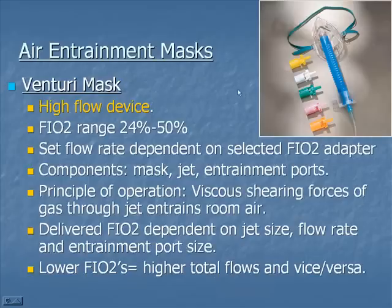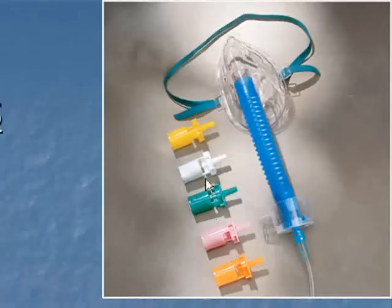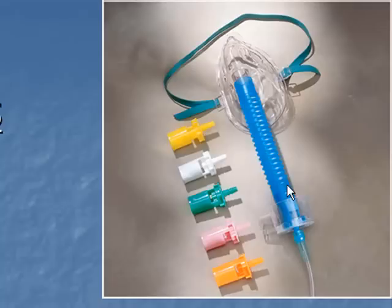That brings us to air entrainment masks. Here is a picture of a Venturi mask with different colored adapters. You pick one of the colored adapters — on the outside rim is written the FiO2 and the flow rate that adapter should be run at. You have reservoir tubing, and one end of the adapter goes into the reservoir tubing. The other end has a very small hole known as the jet, and the size of the hole depends on which adapter you use.